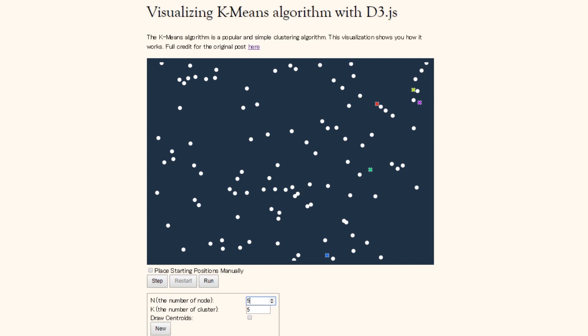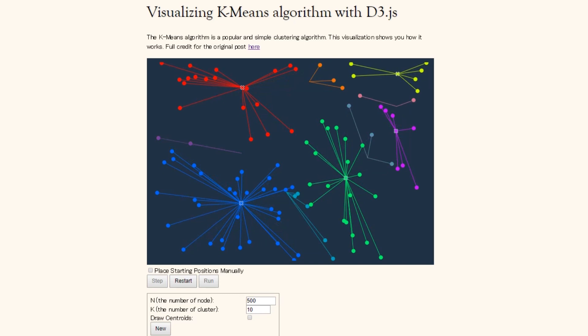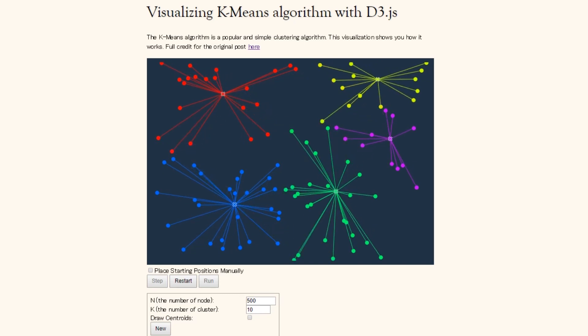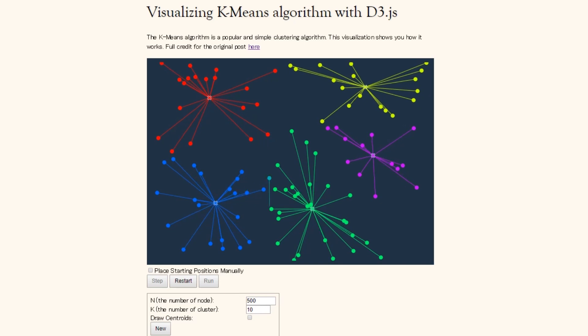What you could actually do here is add the number of nodes and the number of clusters you want to visualize and set the parameters and then you can actually see that according to number of clusters that you have set the nodes will be divided according to it and it keeps on changing after you keep on changing the values.